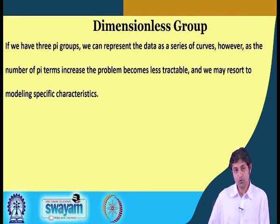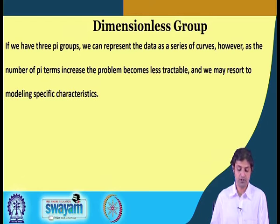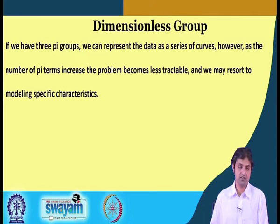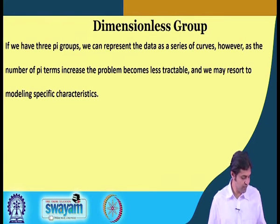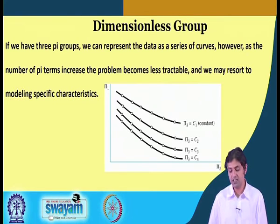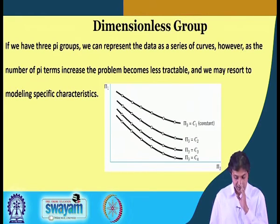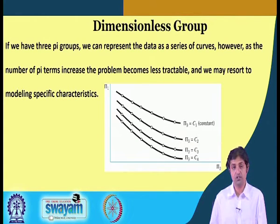If we have three Pi groups we can represent the data as a series of curves. However, as the number of Pi terms increases the problem becomes less tractable and we may resort to modeling specific characteristics. With two groups we had only one curve, but as the number of dimensionless groups increases we have more curves — pi-1 as a function of pi-2 for pi-3 equal to one constant, pi-3 equal to another constant, and so on.